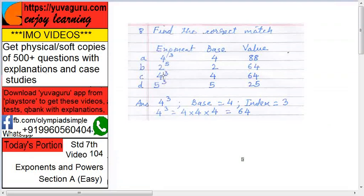C, 4 cube. 4 is the base, correct. But 4 cube is what? 4 into 4 into 4, 64. So C is correct, so C is the answer.